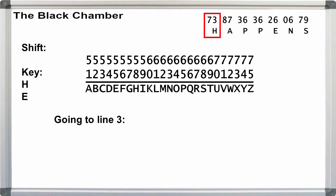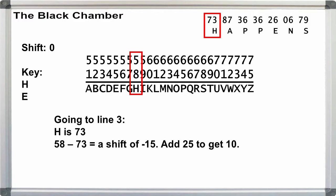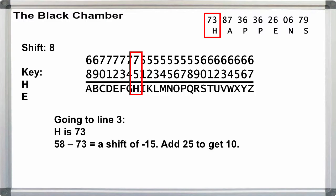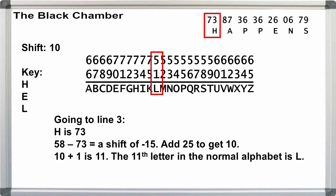For our line 3 letter, we have H is equal to 73. In the table, H is normally 58. 58 minus 73 is minus 15. A negative number indicates that we wrapped around in the table. Add 25 to make it positive, 10. And add 1 for the offset. That gives us 11, and our key letter is L.